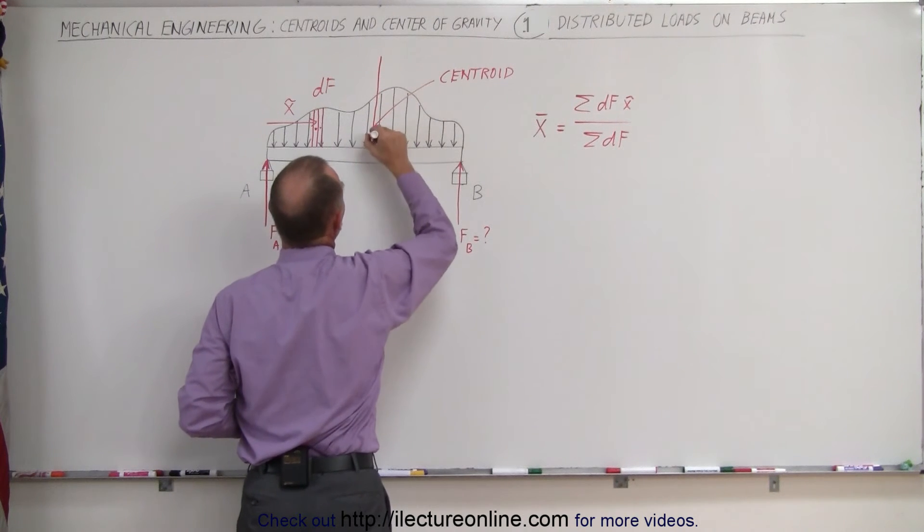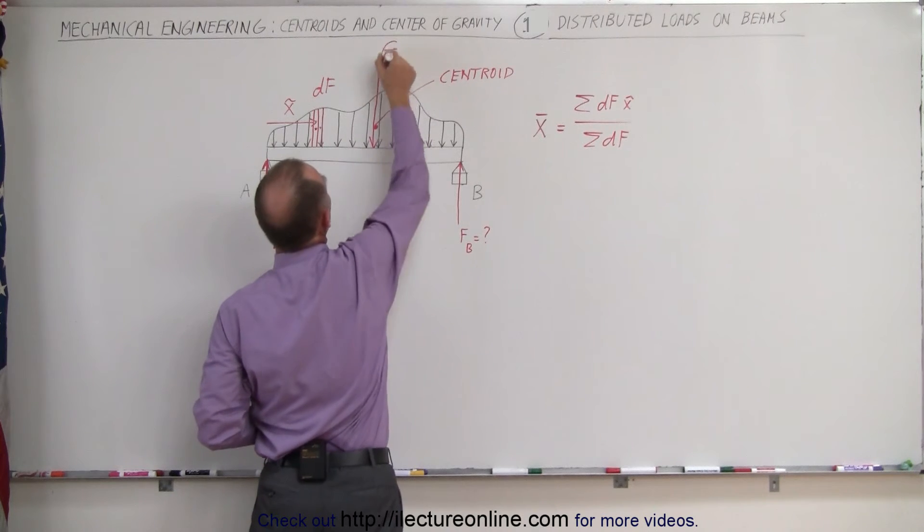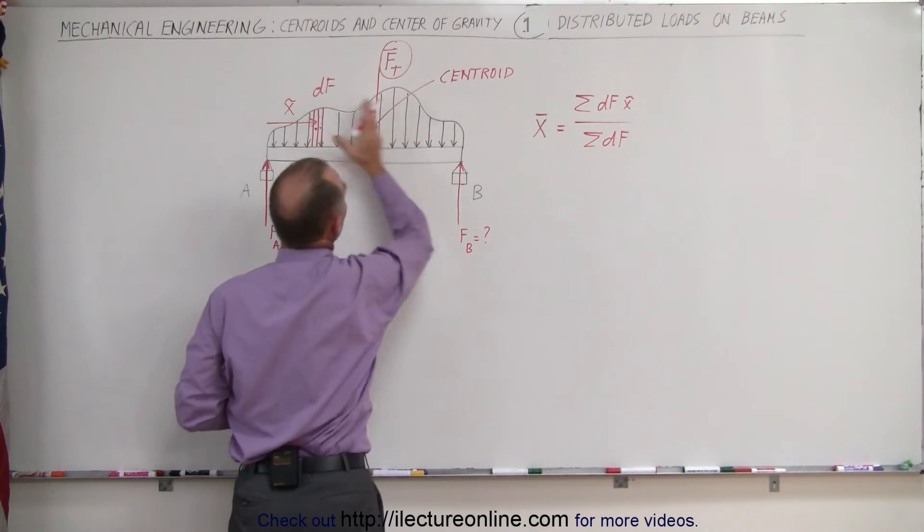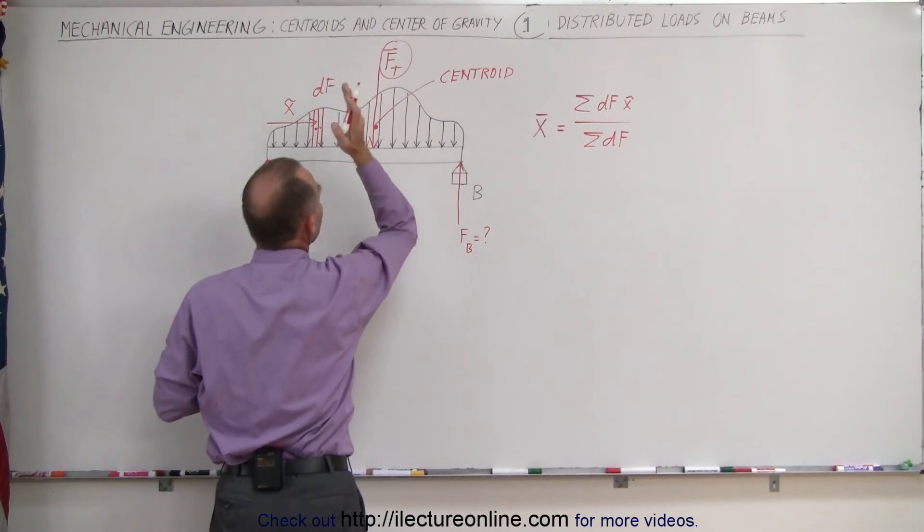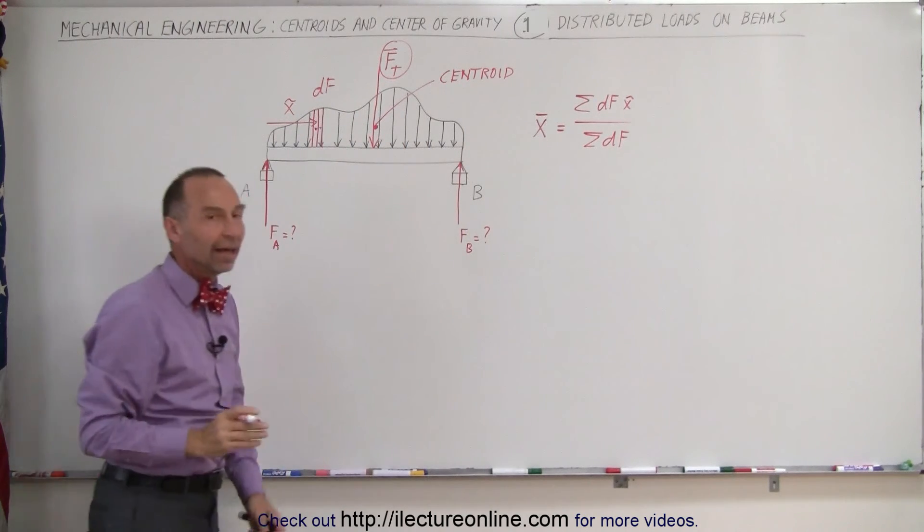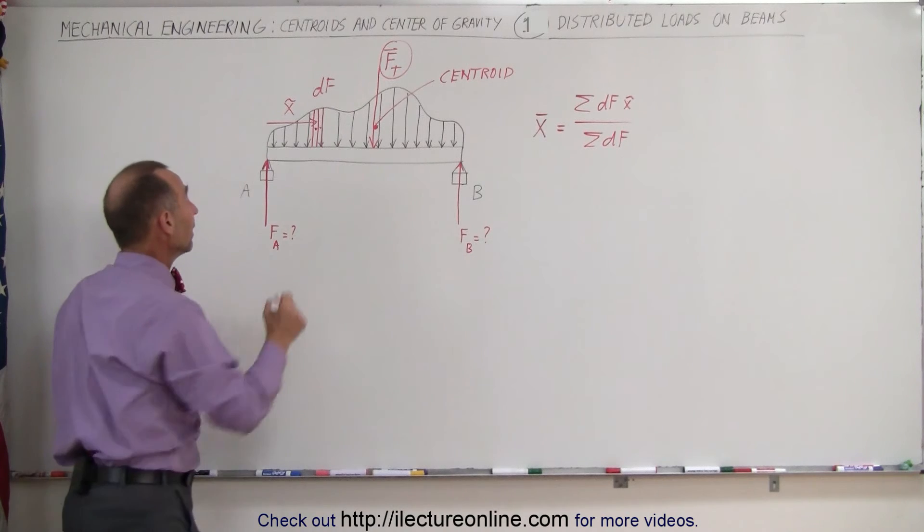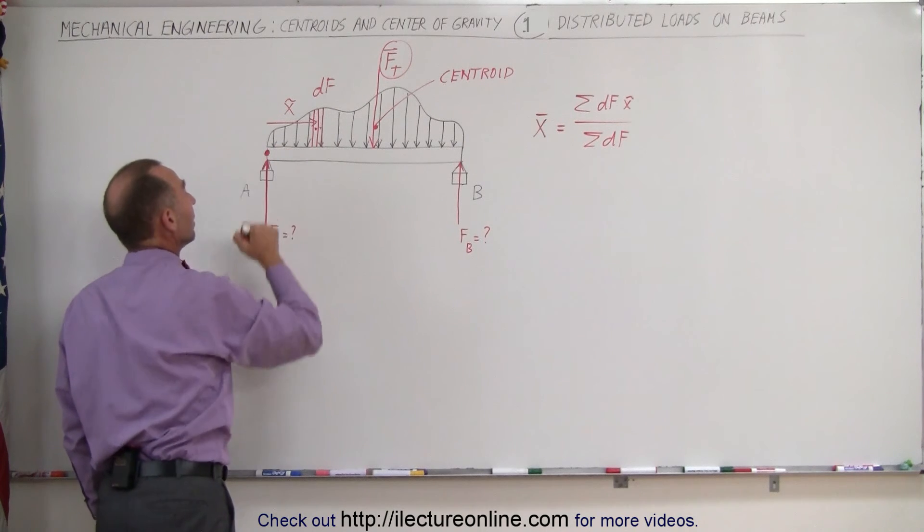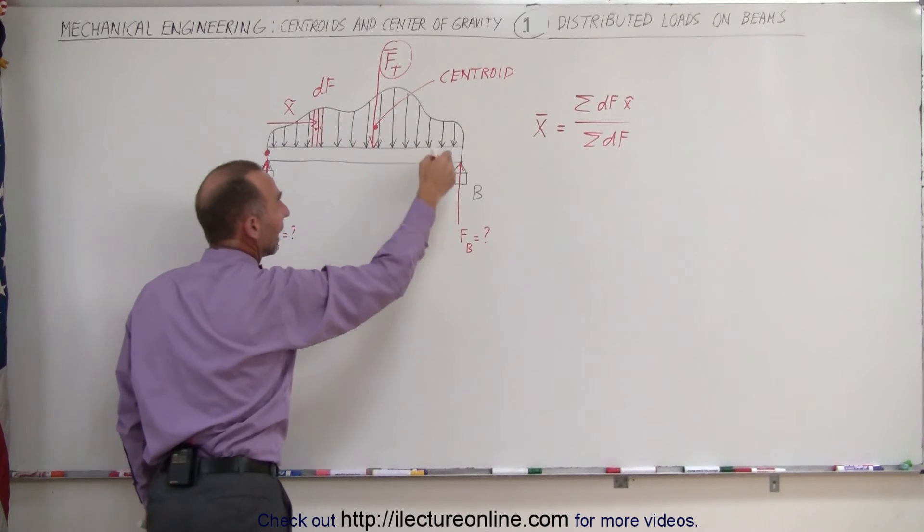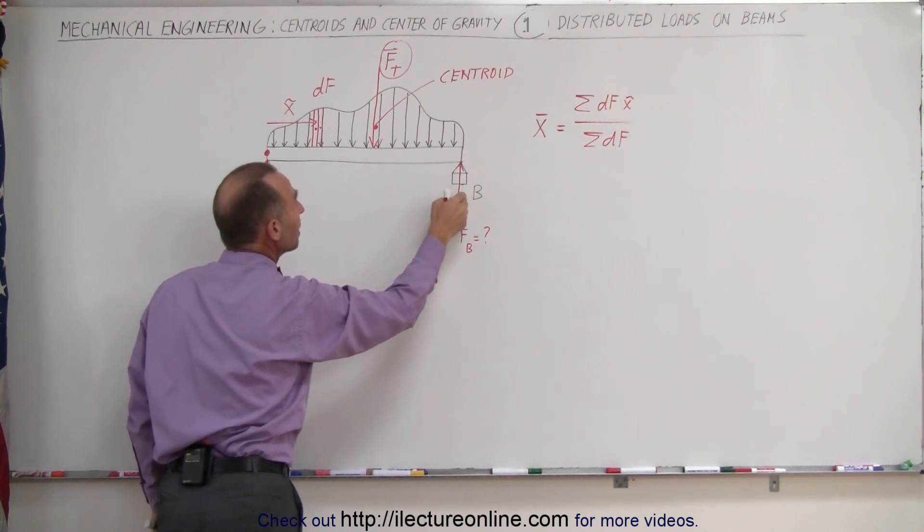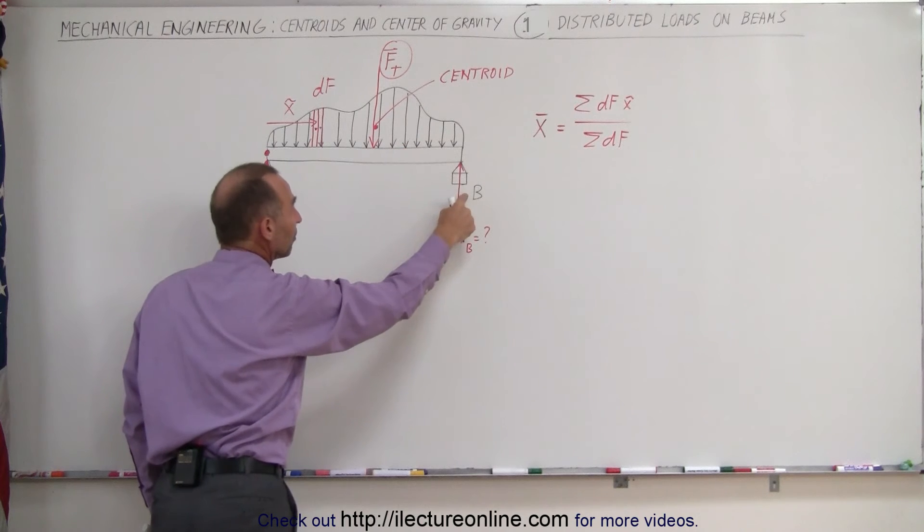If we draw a force vector here, call this force total, that would be the total force equivalent to all the force acting on the beam in its entirety as if it was concentrated at that one single point. And once we do that, we can then put a pivot point right there, sum up all the moments caused by the total force acting at the centroid and the reactionary force at B to find the reactionary force at B.